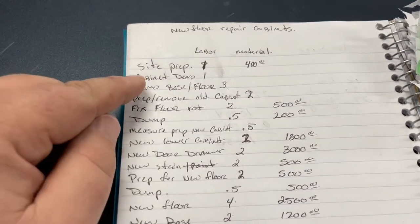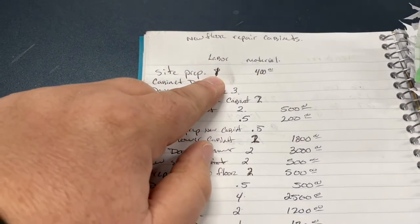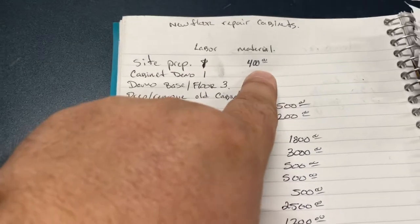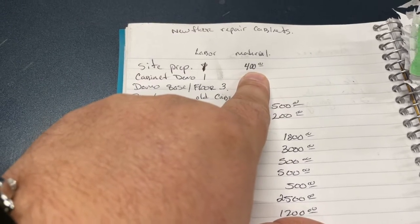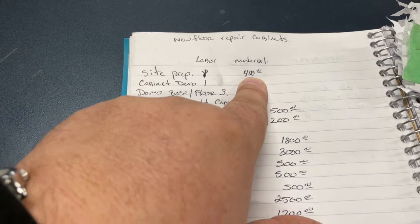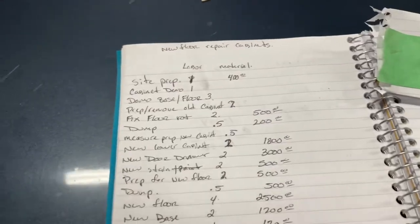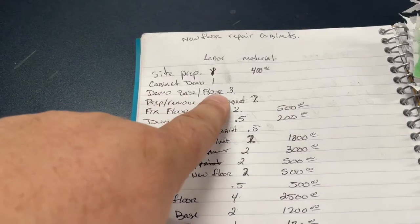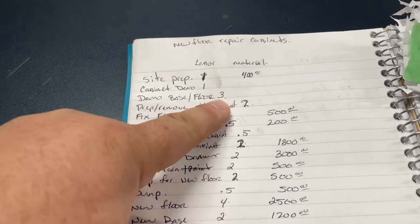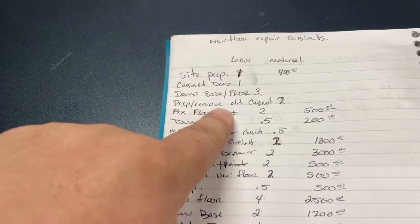We do a ton of site prep. So I have site prep labor one full day. So that's going to be three guys working for about three hours doing site prep. We're going to have about $400 into floor paper, plastic, masking tape, and the floor cardboard. Then we're going to be doing the cabinet demo about one day to take out that one cabinet demoing base trim and floor. We're going to have about roughly three man days. That's going to be three guys one day doing all that demo.